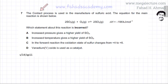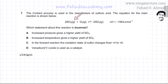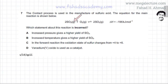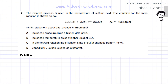The question reads that the contact process is used in the manufacture of sulfuric acid. The equation for the main reaction is shown below: sulfur dioxide reacts with oxygen in equilibrium with SO3, and it is an exothermic reaction in the forward direction. The question asks which statement about this reaction is incorrect, so we are looking for an incorrect statement.